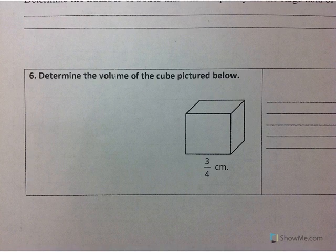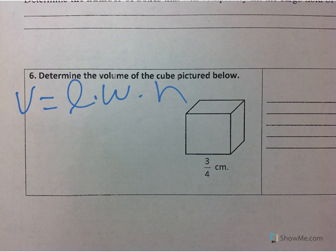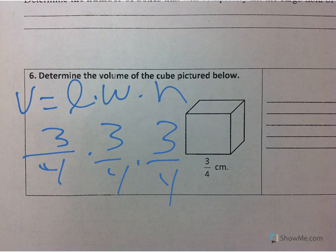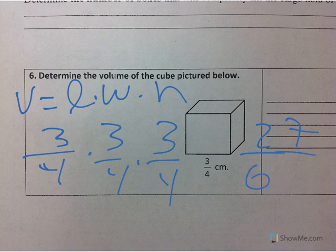Okay, this very last one is asking again for volume, so you're doing length times width times height. This time it's a cube, so it's 3 fourths times 3 fourths times 3 fourths. When I multiply 3 times 3 I get 9, 9 times 3 I get 27. When I multiply 4 times 4 I get 16, times 4 I get 64, so my answer is 27 over 64 centimeters cubed.